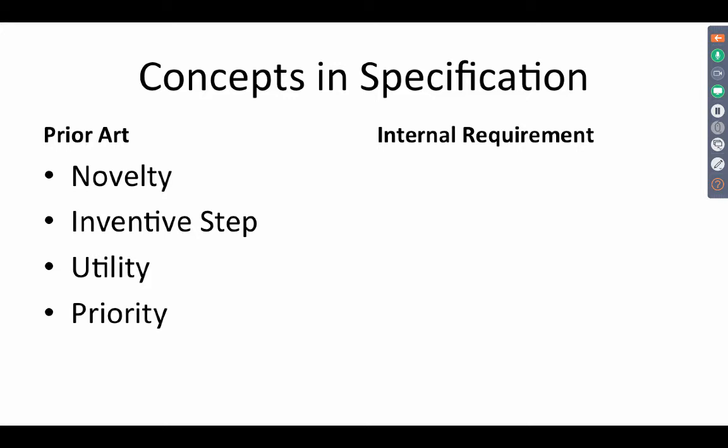Priority — again, choosing priority depends on what has gone before. If there are disclosures made before you file your first priority document, that affects your priority. So the priority is also a concept that is linked to the prior art.